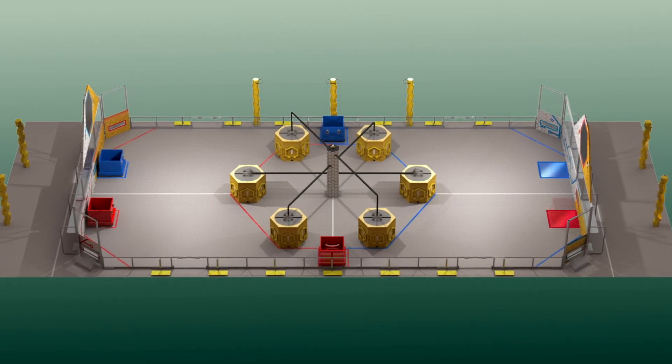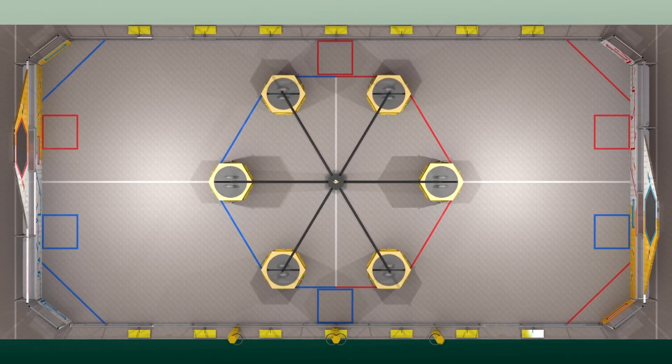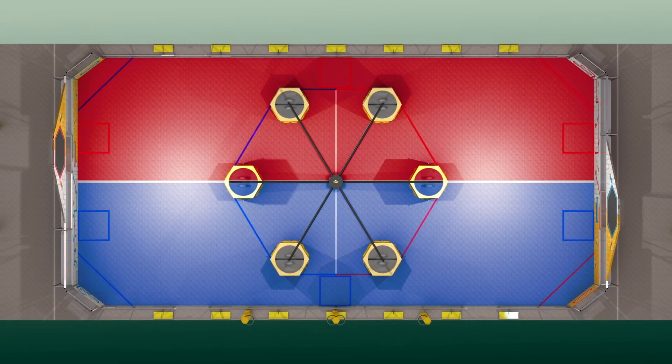Drones start inside one of the auto boxes with either 15 nectar or one comb. For the 15 second autonomous period, drones score while staying on their half of the hive.